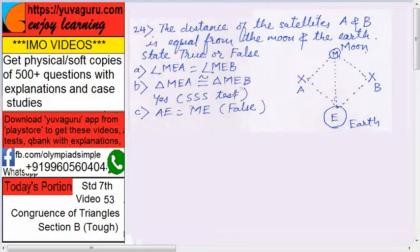Now once these are congruent, then MEA equals to MEB. What? CPCT. AE equals to ME, that is false, because A is this, ME is this. A should be equal to BE.